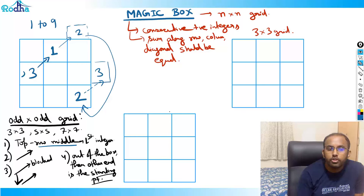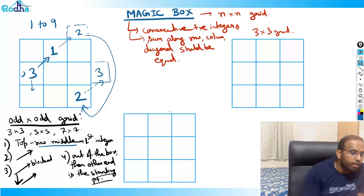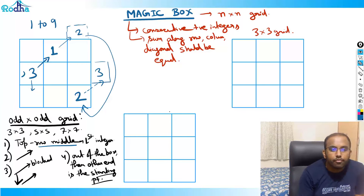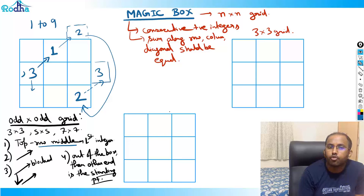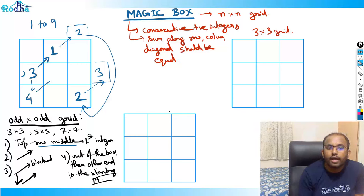When blocked, just go one step down and fill 4 there. Again go diagonally up: 5. Again diagonally up: 6. Now we can't go diagonally up because it's blocked outside the square.